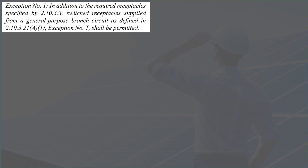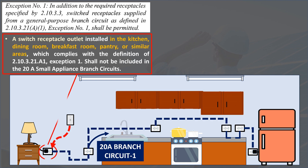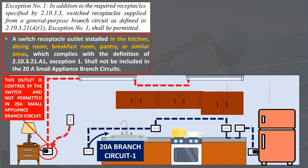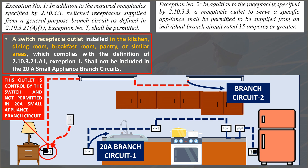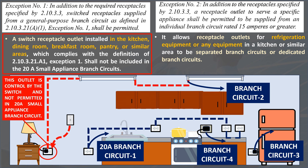How about the other kitchen — can we combine those outlets with the other kitchen outlets? For Exception 1, if a switch receptacle outlet is in the kitchen, dining room, breakfast room, pantry, or similar area that complies with the definition of 2.10.3.21A, it is not permitted to be included in 20A small appliance branch circuits of kitchen and countertop outlets. For Exception 2, it allows receptacle outlets for refrigeration equipment or any equipment in a kitchen or similar area to be on separate branch circuits or dedicated branch circuits. The rating should be 15A or larger, depending on the rating of the equipment it serves.